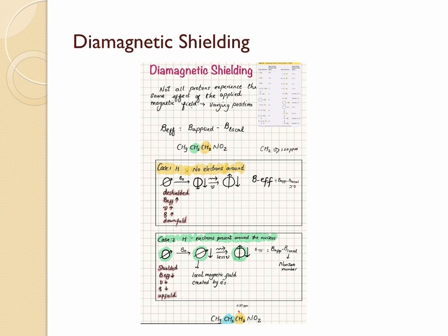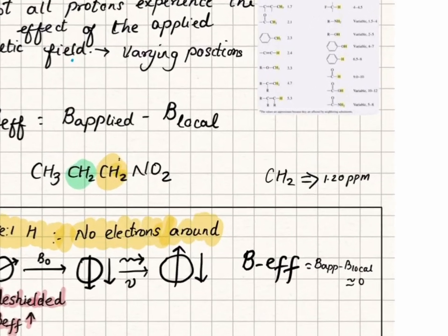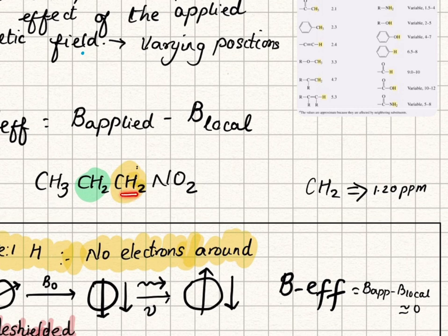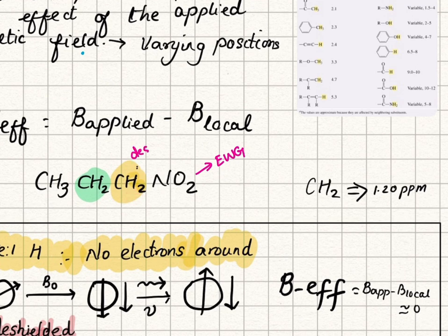Let's take a real example to understand shielding and deshielding and see how the chemical shift of protons is affected by surrounding electrons. Let's take nitropropane. In nitropropane, we have two methylene groups: one methylene group is closer to the nitro group, and the other is two steps away from the nitro group. The nitro group is an electron-withdrawing group, which pulls electrons toward itself. Because of this, the hydrogens on the methylene closer to the nitro group are said to be deshielded, whereas the hydrogens on the methylene two steps away are comparatively shielded.